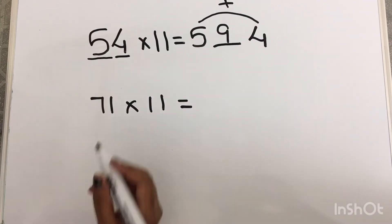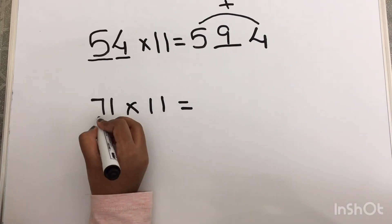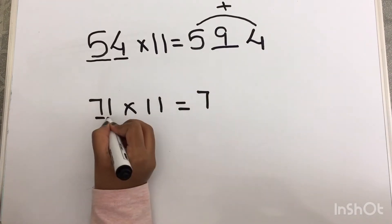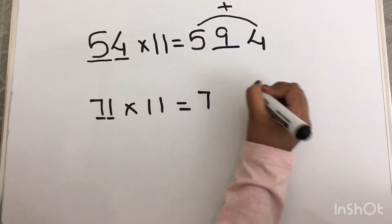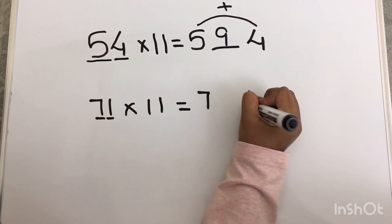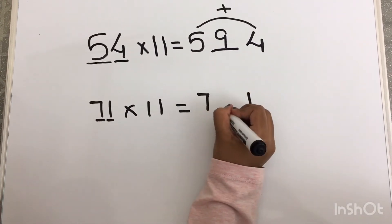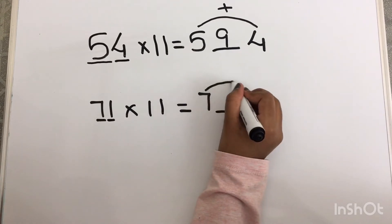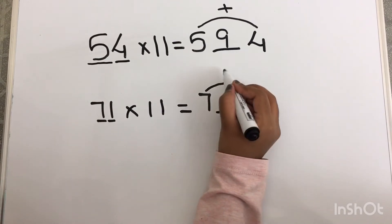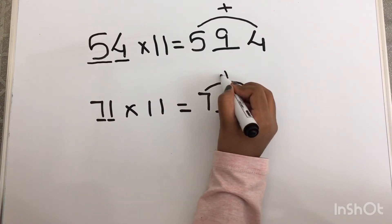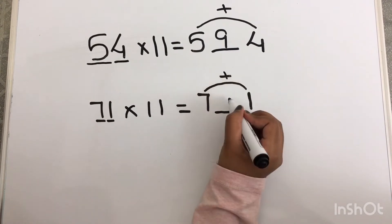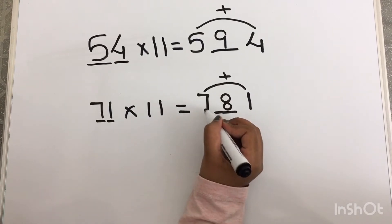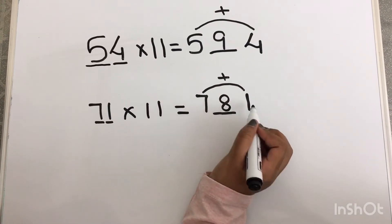I am going to write the tens digit 7 here and the units digit 1 here. For the middle number I am going to add both these numbers. 7 plus 1 equals 8. The answer is 781.